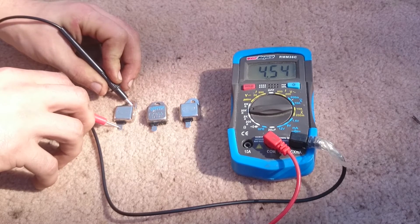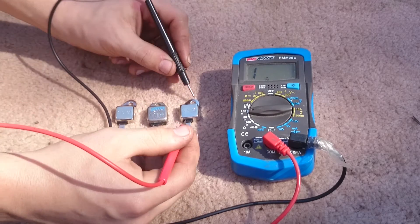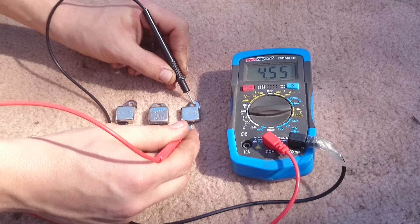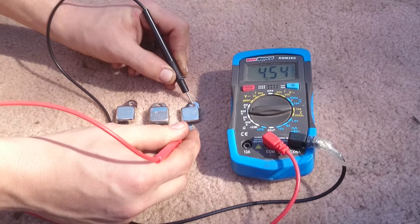So here we've got 4.54k ohms through the new one. We'll test the other new one, get an average. We've got 4.54, so as new they should be at 4.54.